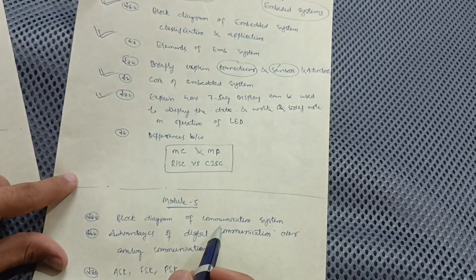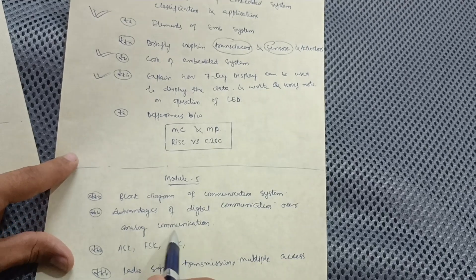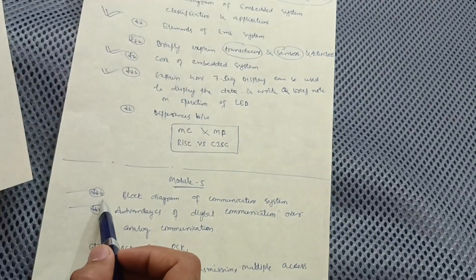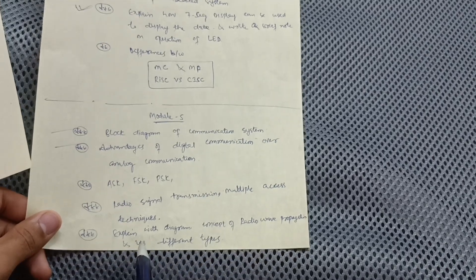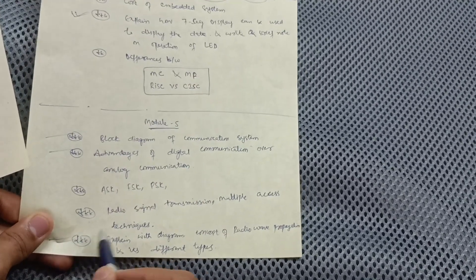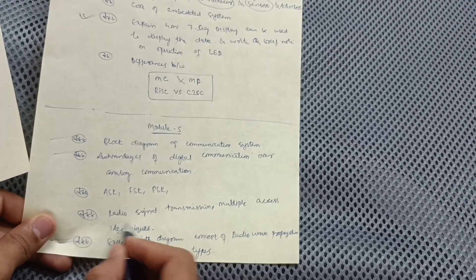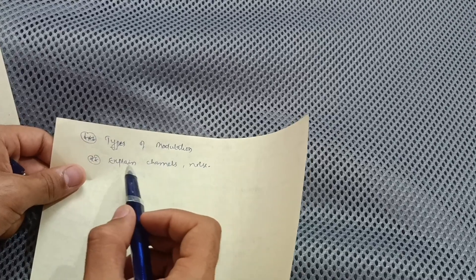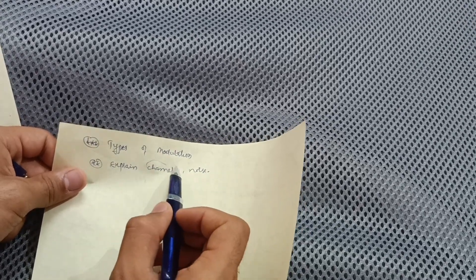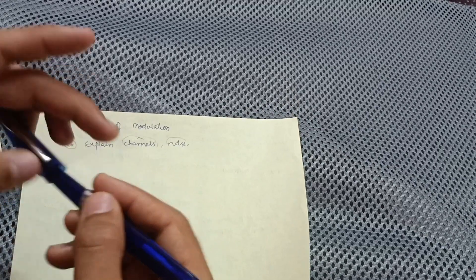Module 5 requires you to cover the block diagram of a communication system and advantages of digital versus analog communication. Explain the concept of radio wave propagation and its different types — this is the most important topic. Also cover radio signal transmission, multi-access techniques, FSK and PSK. Types of modulation is another important question. You should have conceptual knowledge of channels and noise, and you can write it in your own words in the examination.